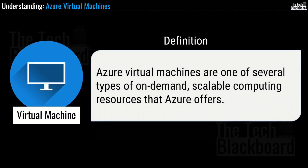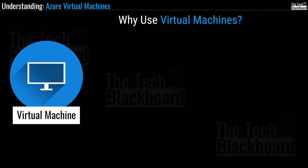Like any other cloud resource, Azure virtual machines are also one of several types of on-demand scalable computing resources that Microsoft Azure offers. You can think of virtual machines as purchasing a laptop in the Azure cloud — a computer within a computer. Virtual machines simply imitate the behavior of another computer but inside the cloud. Azure virtual machines give you the flexibility of virtualization without having to buy and maintain physical hardware. The user has access to the same applications, user interface and settings as if it was their own computer.